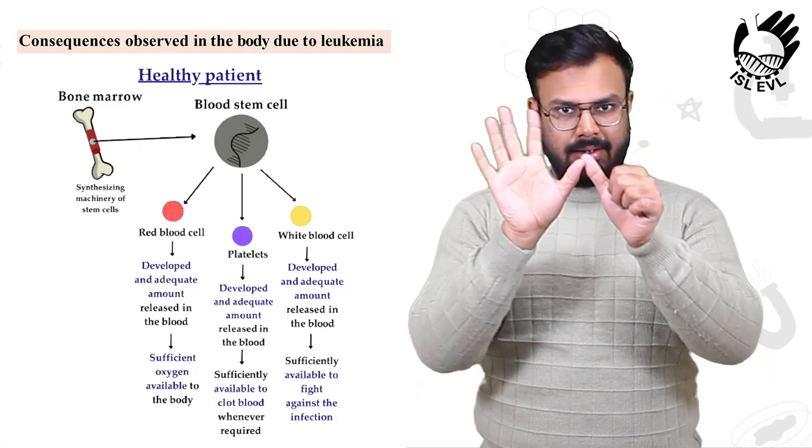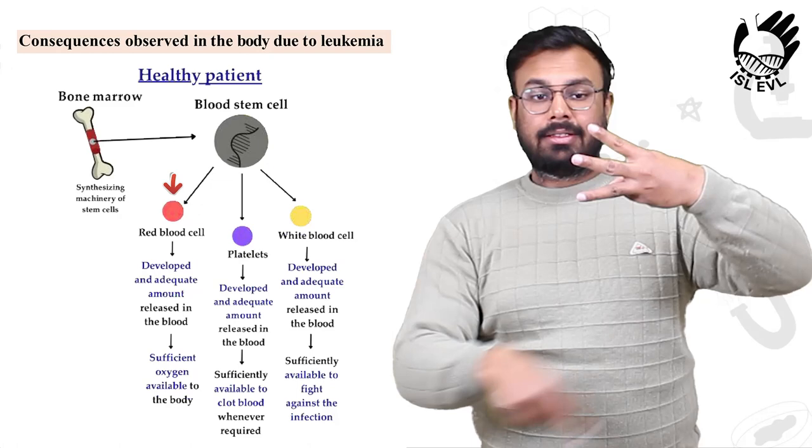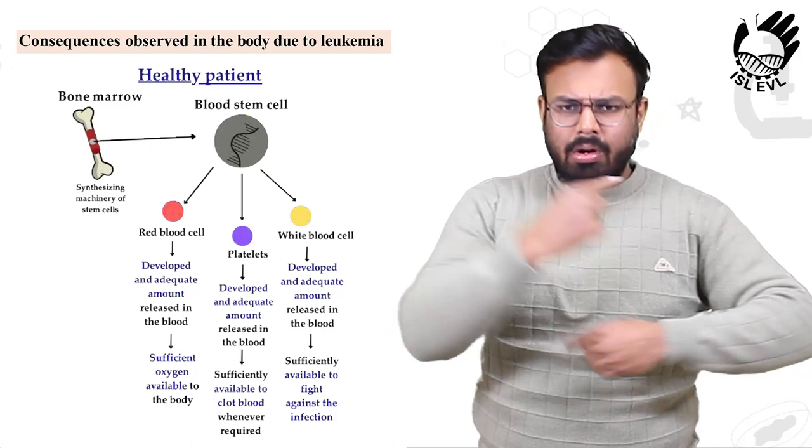In the healthy patient chart, there are three types of blood stem cells: First, red blood cells. Second, platelets. And third, white blood cells. RBC develop an adequate amount released in the blood, and sufficient oxygen is available to the body.